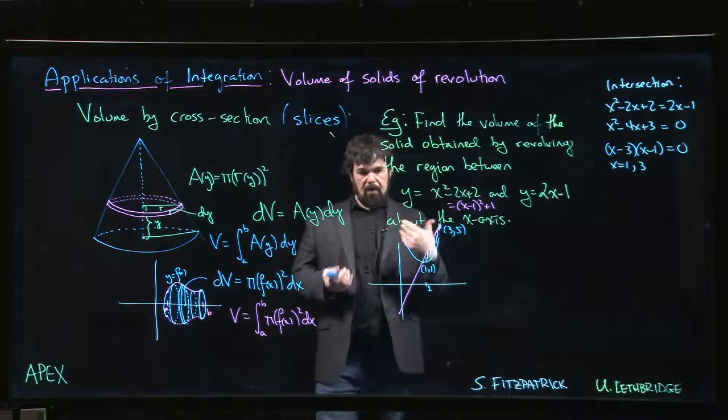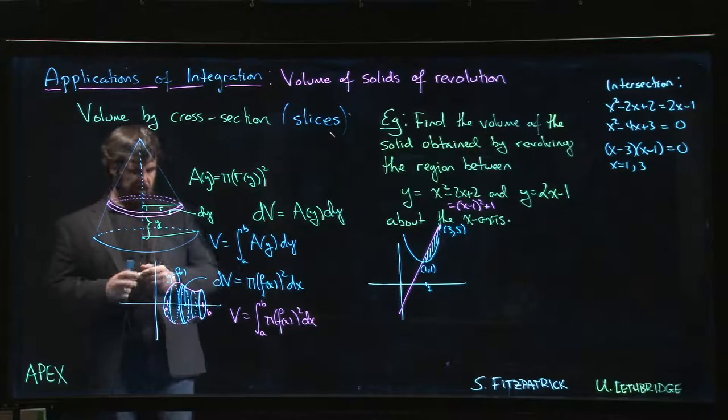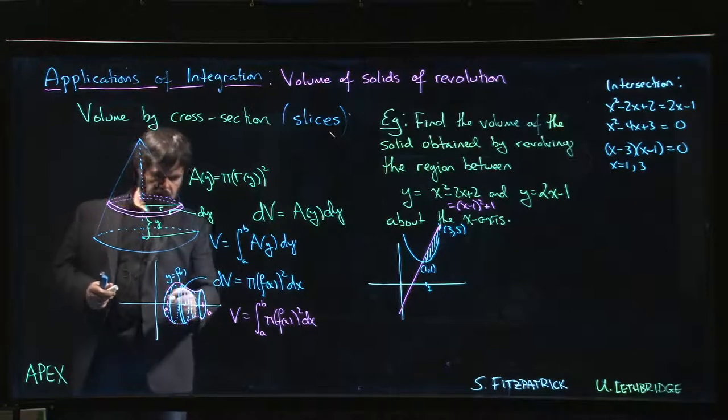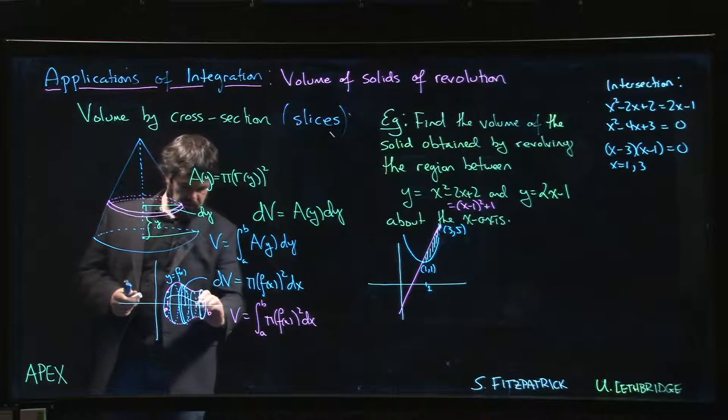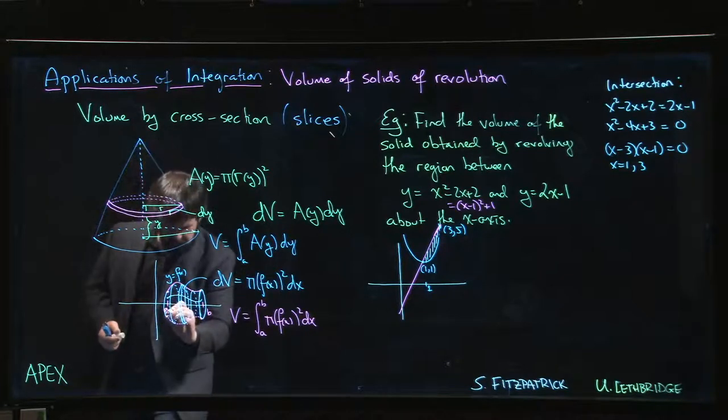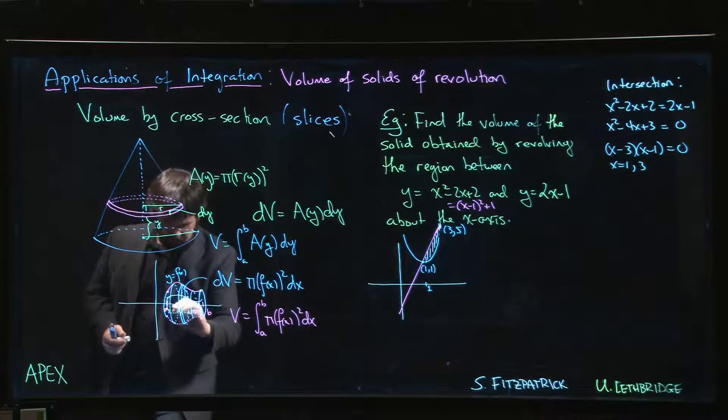So what happens when we revolve this region? What's going on exactly? Well, what happens now is that you sort of have one curve that's going around, and you're going to introduce a second curve. So there's going to be a second curve in there, and you're going to revolve that one around.